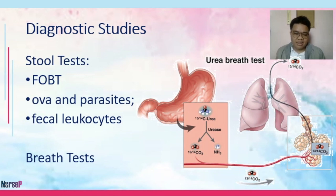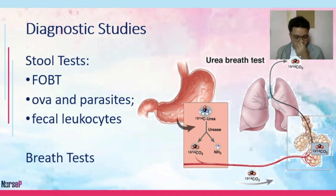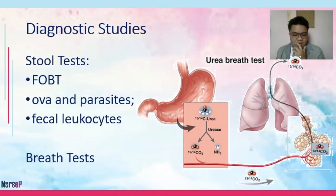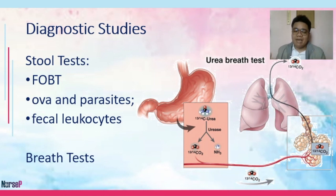For breath tests, there are two commonly done to assess GI functioning: hydrogen and urea breath tests. The hydrogen breath test is used to evaluate for the presence of fermenting bacteria in the gastrointestinal system. Galactose — a disaccharide — is administered to the patient, and if fermenting bacteria are present in the GI tract, hydrogen will be detected in the patient's breath.